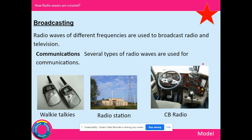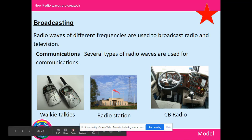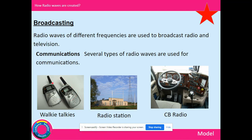Types of radio waves and their uses. Radio waves of different frequencies are used for broadcast radio and television. Communications is another key use — walkie-talkies, radio stations, and CB radios all use radio waves, each on a different frequency. Occasionally you can get 'flooding,' where you pick up radio signals from another group using similar walkie-talkies on a nearby frequency.